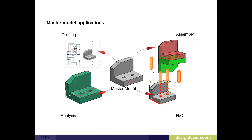The component is considered the master model. Edits to the master model are updated in the drawings. So anything you do — whether it's a draft, assembly, or part — will automatically update on your 2D drawings. Here's another view of how we look at the master model. You can see that anything you do here will also reflect back in your assembly, CAM, or analysis.